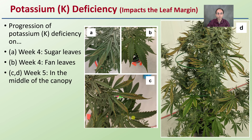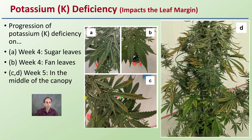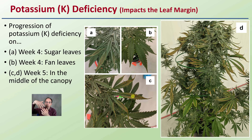For potassium deficiency, we see the progression in the sugar leaves and fan leaves at week four, with the middle portion of the canopy showing the most severe symptoms. Typically, the deficiency appears more on the margins or edges of the leaves and toward the leaf tips — those are the key areas to look at if you're suspecting a potassium deficiency.